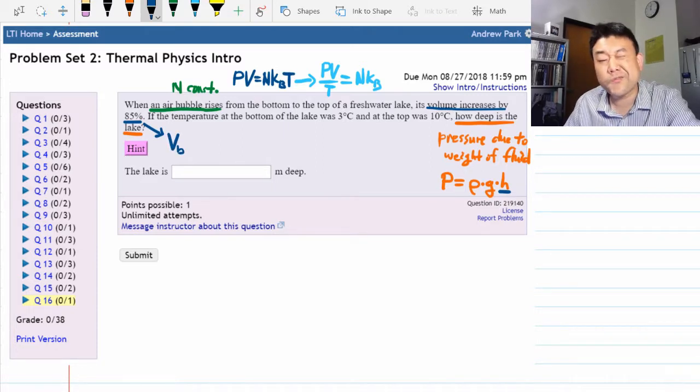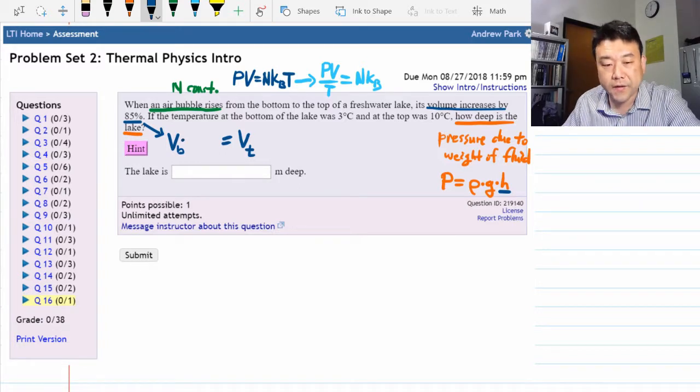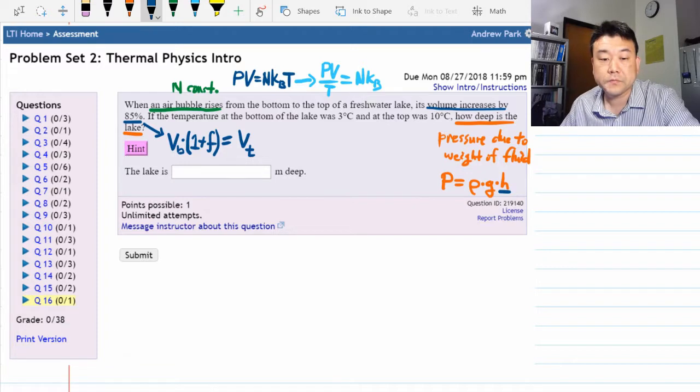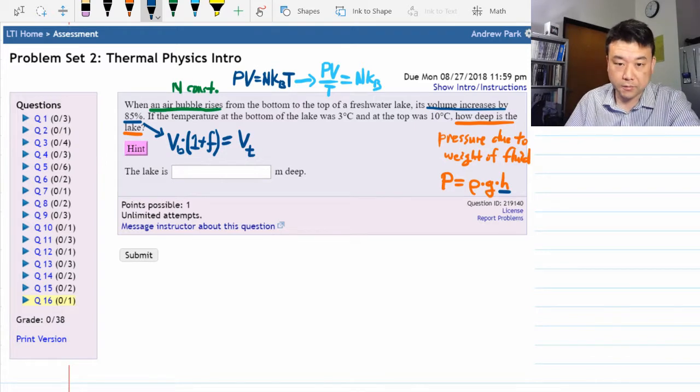then the volume at the top is greater. And we would say it's greater by a factor, not 85%, but let me write it this way: one plus the fractional quantities that are given. So here it would be 1 plus 0.85, so 1.85.